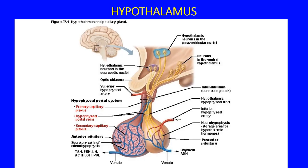The hypothalamus is inferior to the thalamus. The thalamus is a switching station that sends sensory information to the various lobes of the brain — hearing to the temporal lobe, visual to the occipital, somatosensory to the parietal lobe.